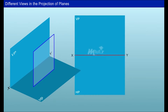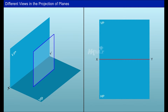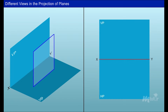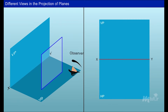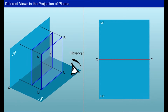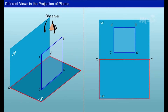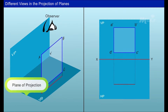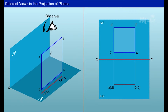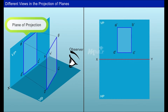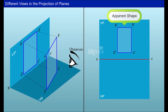Consider a square lamina in the principal plane. When a lamina is parallel to the plane of projection, it will be perpendicular to the other plane. Thus, the view of the plane surface projected on the plane of projection gives the true shape of the lamina. The view of the plane surface perpendicular to the plane of projection will be a line, called a line view. The view of the plane when it is inclined to the plane of projection is known as the apparent shape of the plane.